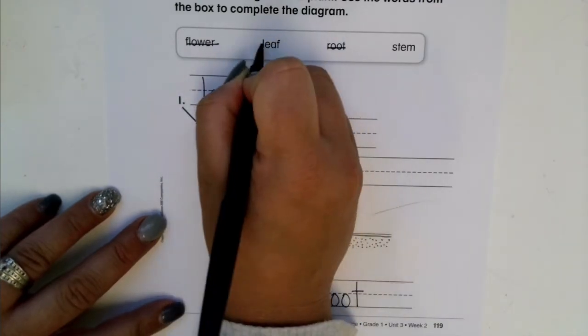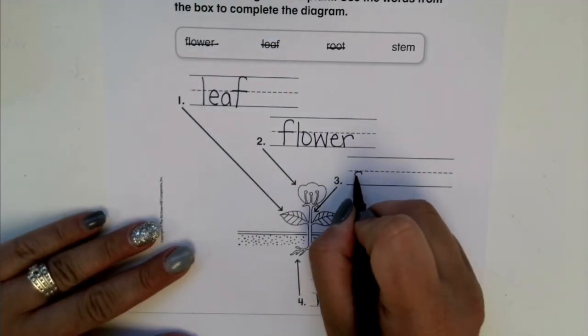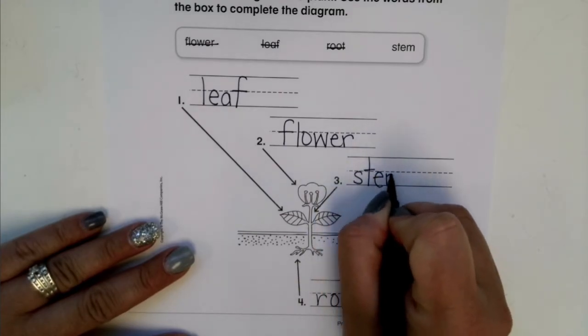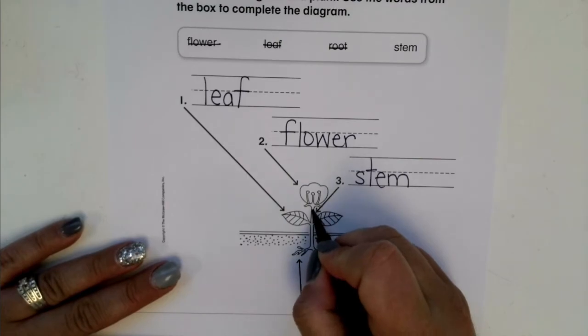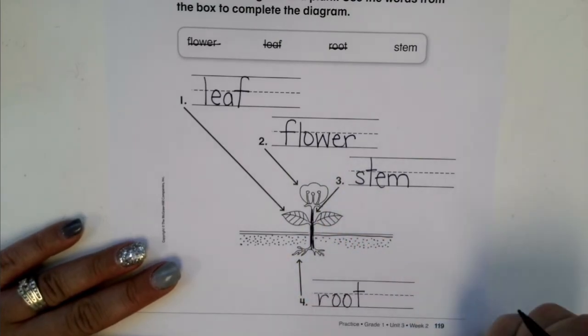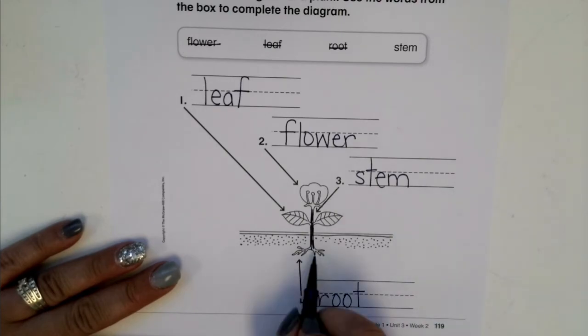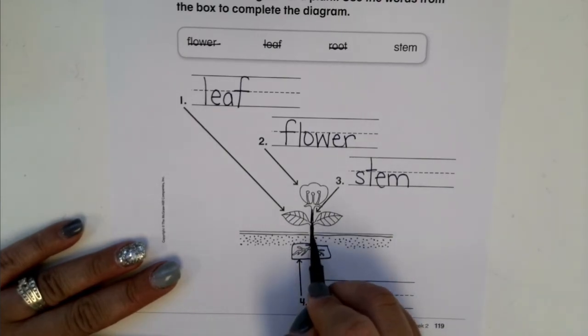And then lastly you have the stem. The stem is this part here that I'm coloring in so you can see it better. That's the stem. This down here, though, these are the roots, so the stem leads into the roots.